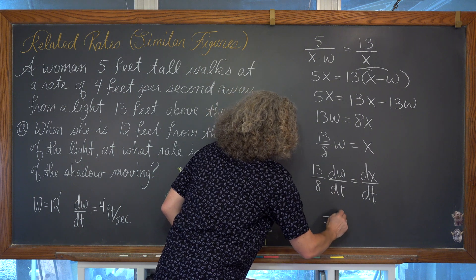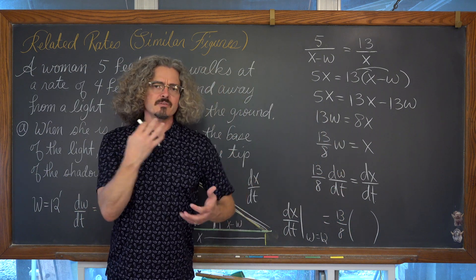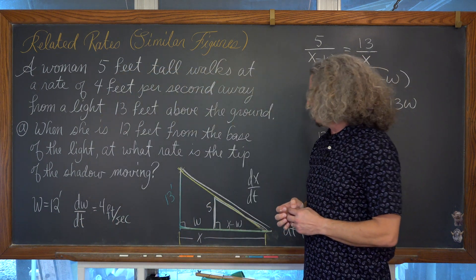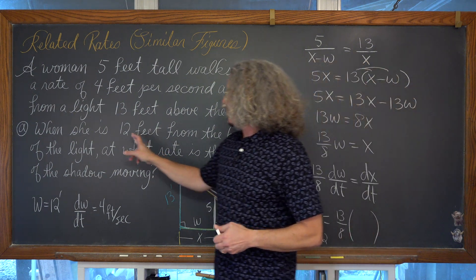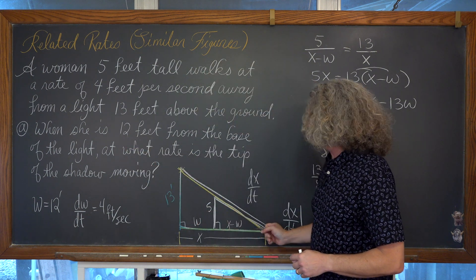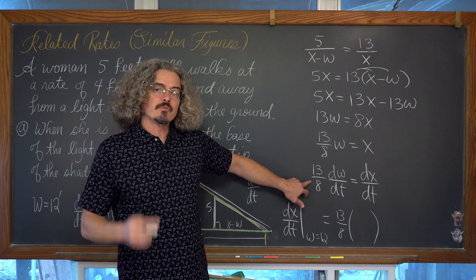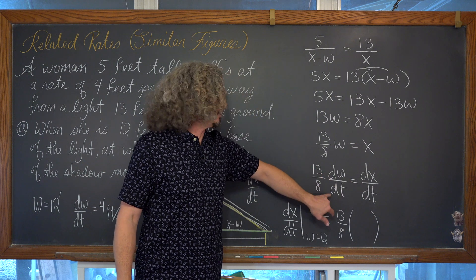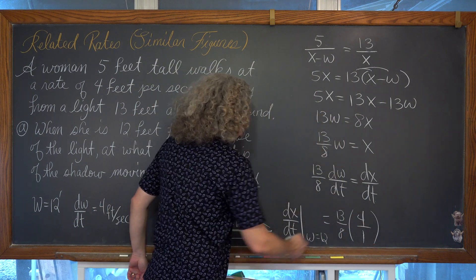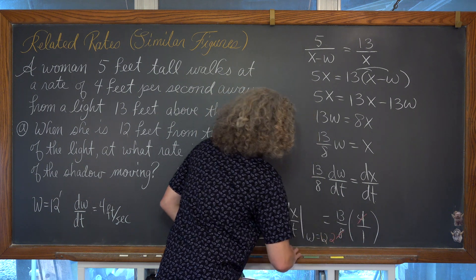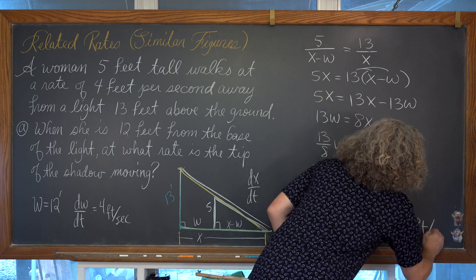The derivative only asks for dw/dt — the rate at which the woman is walking. This is a unique characteristic of the problem: the rate at which the tip is moving is only dependent on how fast this person is walking, which is 4 feet per second. The 4 cancels with the 8, giving a division of 2, and our final answer is that the tip of her shadow is moving at 13/2 feet per second.